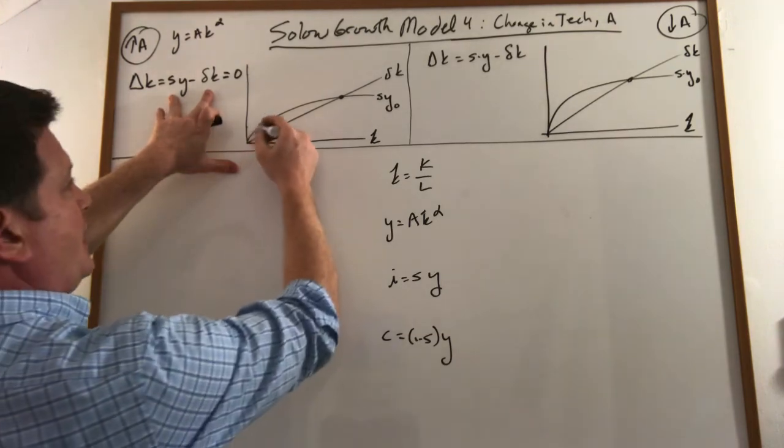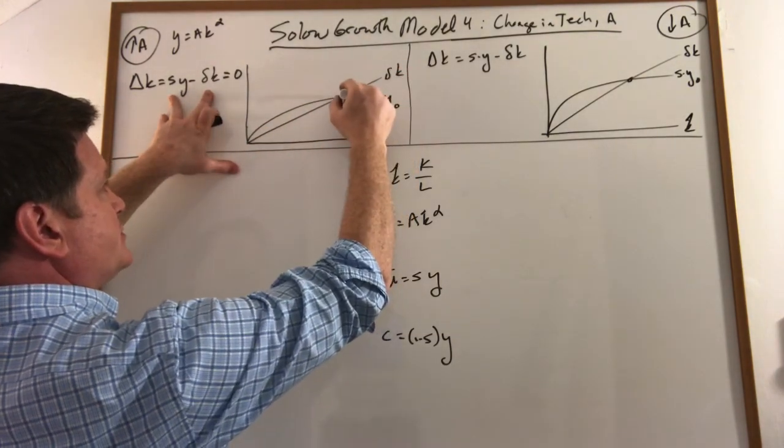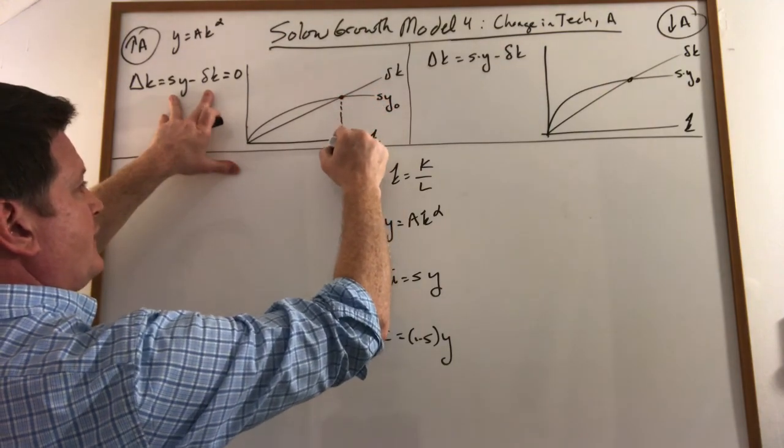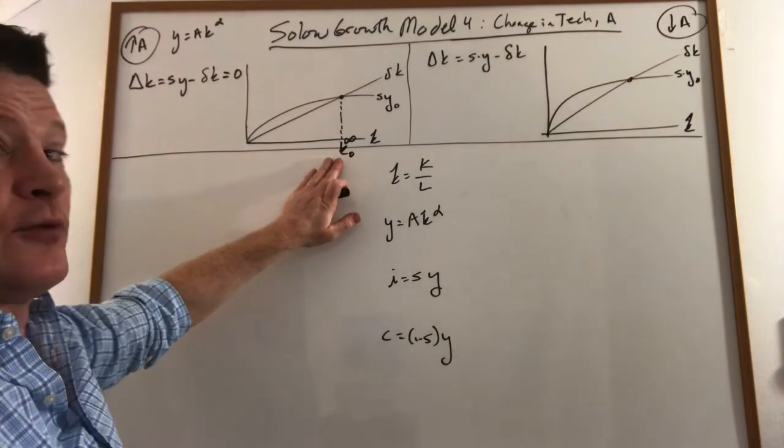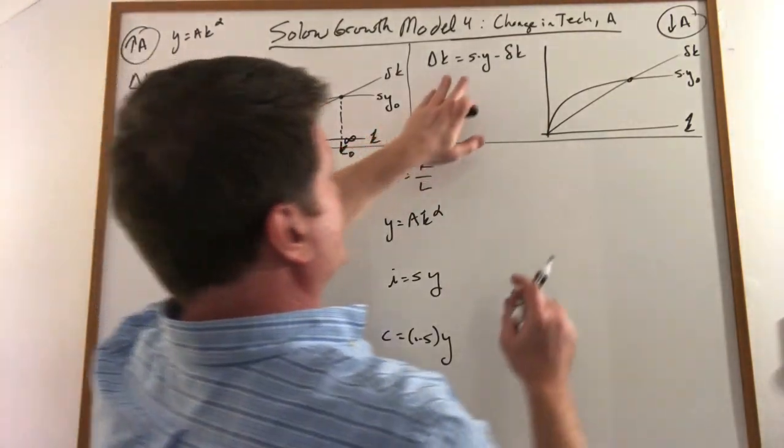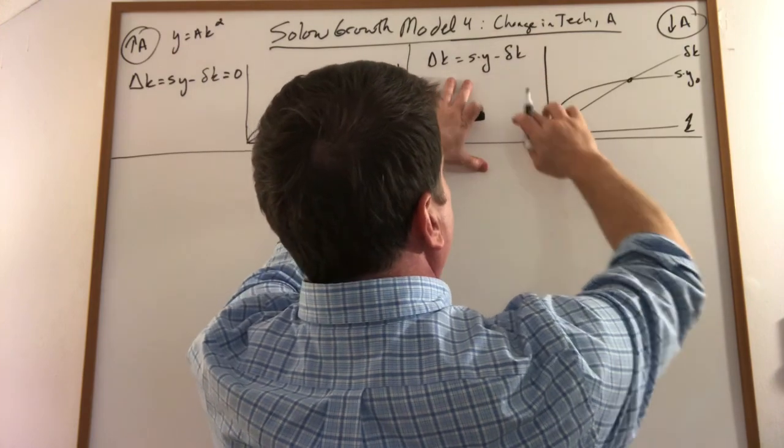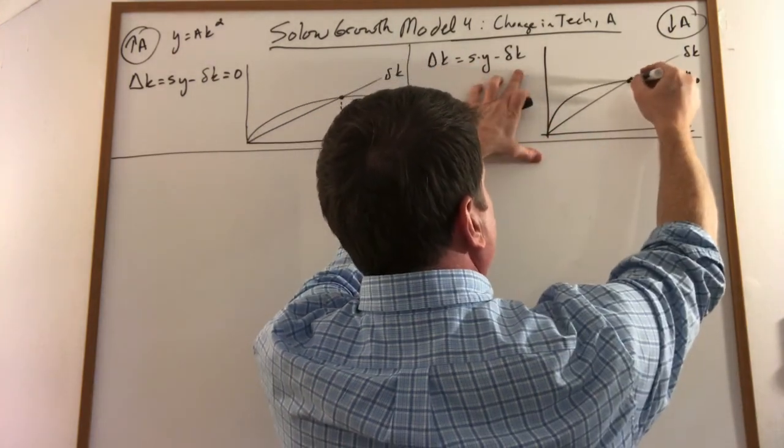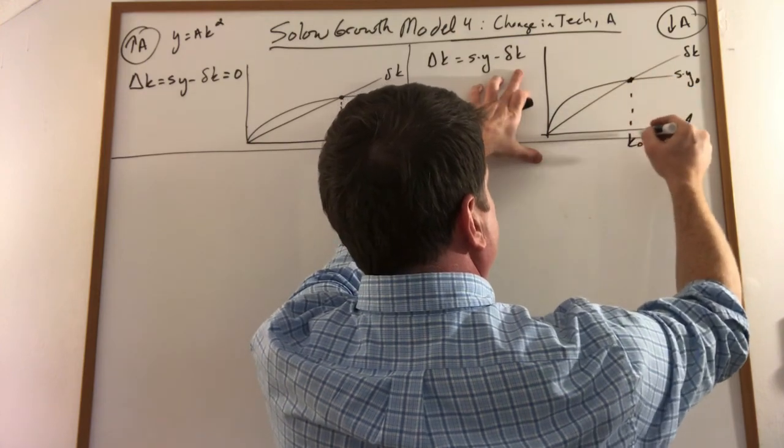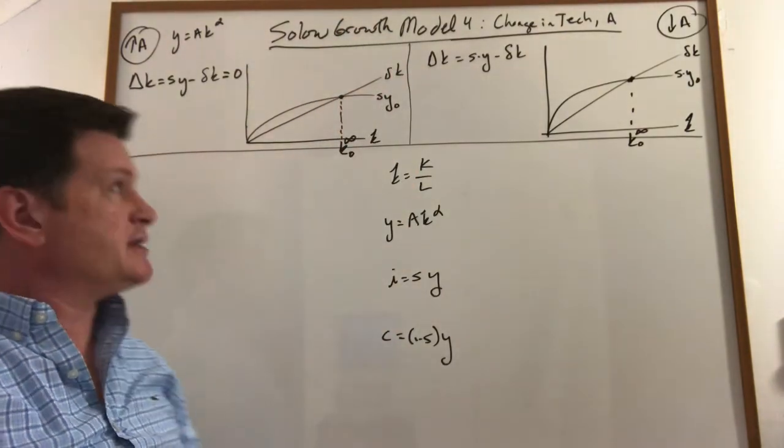Graphically, that happens when your investment curve is exactly equal to your depreciation curve, and it defines what we call steady state level of capital per worker. Same as over here, capital accumulation—investment minus depreciation—where they cross defines your initial steady state of capital per worker. So I'm going to look at both cases simultaneously, an increase in technology and a decrease in technology.